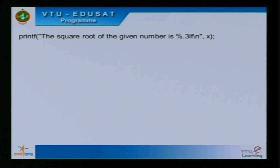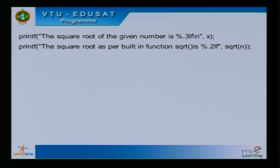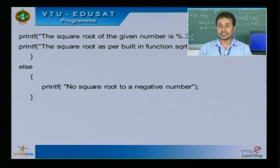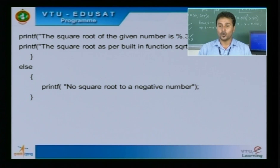Finally we print the results on the output screen. We print two values: the square root calculated by our program stored in x, and a comparison with the standard library built-in function sqrt(n). In the else branch, if the condition doesn't match — that is, if n is less than 0 — there is no square root for a negative number. This ensures the input value of n is always on the positive side.